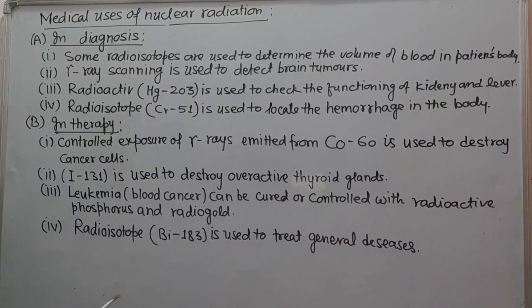Next, we take medical usage of nuclear radiations. The applications in diagnosis: number one, some radioisotopes are used to determine the volume of blood in patient's body. Number two, gamma ray scanning is used to detect brain tumors.